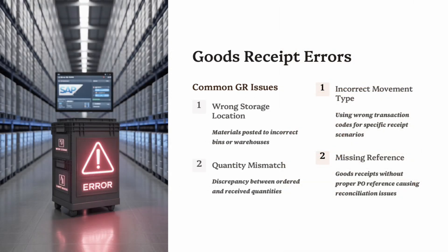Part 3: Goods Receipt MIGO Errors. Another common area for mistakes in SAP MM is during the Goods Receipt process, usually performed in transaction MIGO. Since GR updates stock and clears part of the procurement cycle, errors here can cause both logistics and accounting issues.